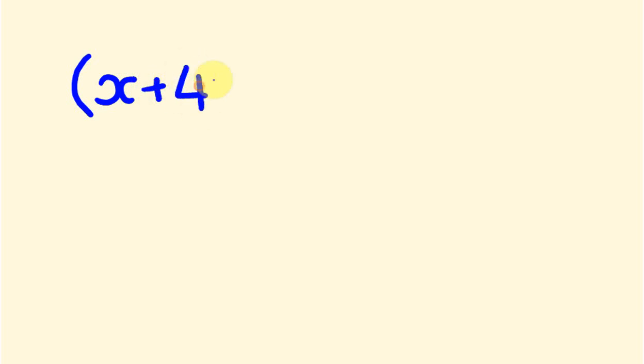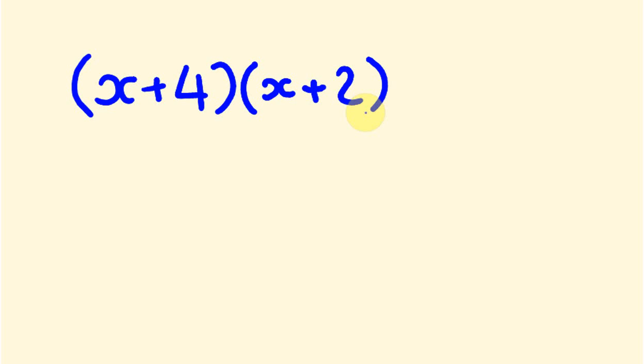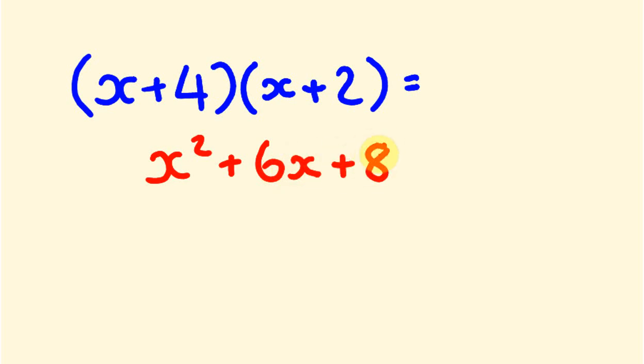So the binomials we're going to be looking at — I'll give you an example right now. Say I get you to have a look at multiplying these ones, solving these particular binomials. I've got x plus 4 in this bracket and x plus 2 in this bracket. So how quickly can you solve this? You should be able to do this fairly instantly because the answer to this is x squared plus 6x plus 8. These binomials, you should be able to solve them fairly rapidly. I'll show you right now how I go about getting the answer to this pretty much instantly.